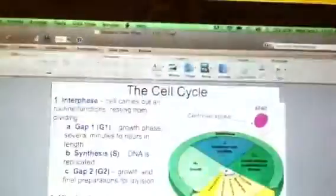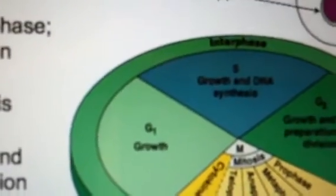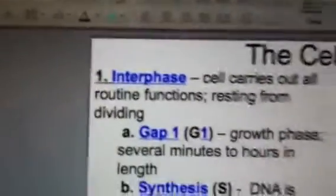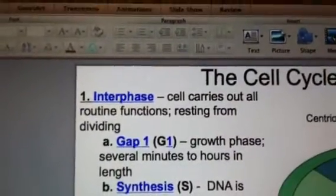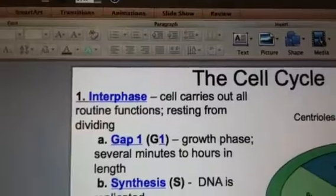There are three sub-phases within that: the gap, which is gap 1, if you look at this pie chart right here. G1 stands for growth, and gap 1 is when the cell is actually growing in size.